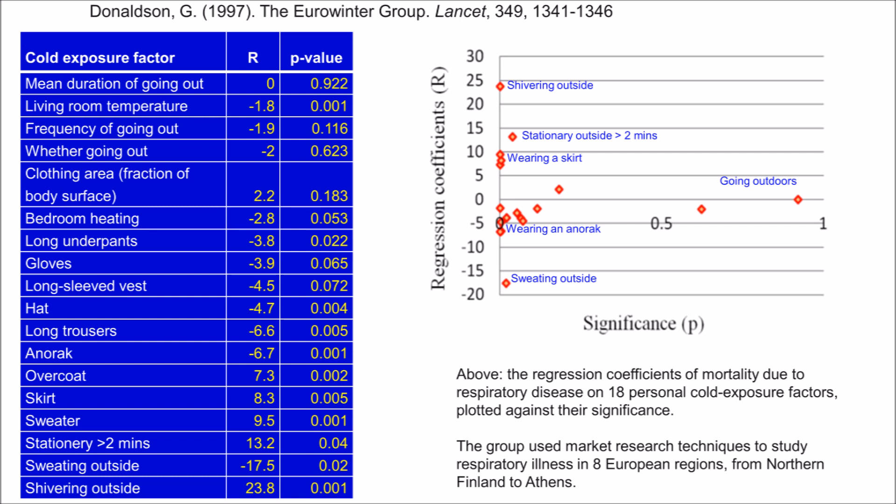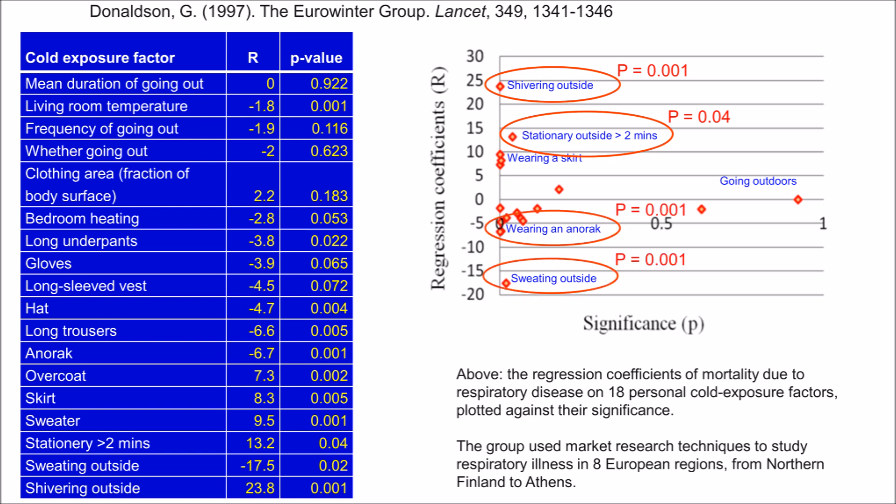A paper published in 1997 by the Eurowinter Group used market research techniques to look at factors that increased the chance of dying of a respiratory illness in seven regions of Europe, from northern Finland to Athens. They found that standing still outside (P=0.04) and shivering outside (P=0.001) were correlated with an increased chance of death. However, outdoor exercise sufficient to cause sweating and wearing an anorak both seemed to be protective — both P=0.001.